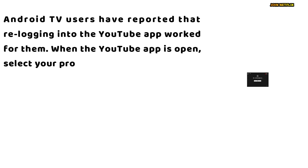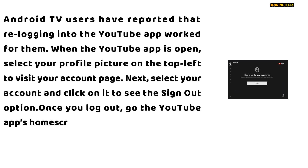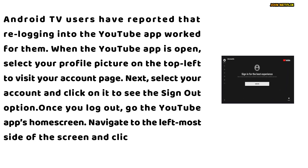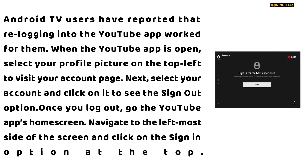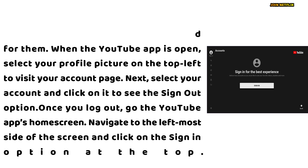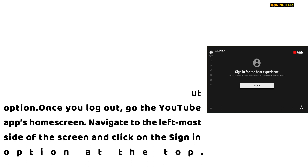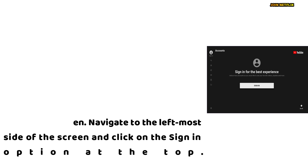Android TV users have reported that re-logging into the YouTube app worked for them. When the YouTube app is open, select your profile picture on the top left to visit your account page. Next, select your account and click on it to see the sign-out option. Once you log out, go to the YouTube app's home screen, navigate to the left-most side of the screen and click on the sign-in option at the top.